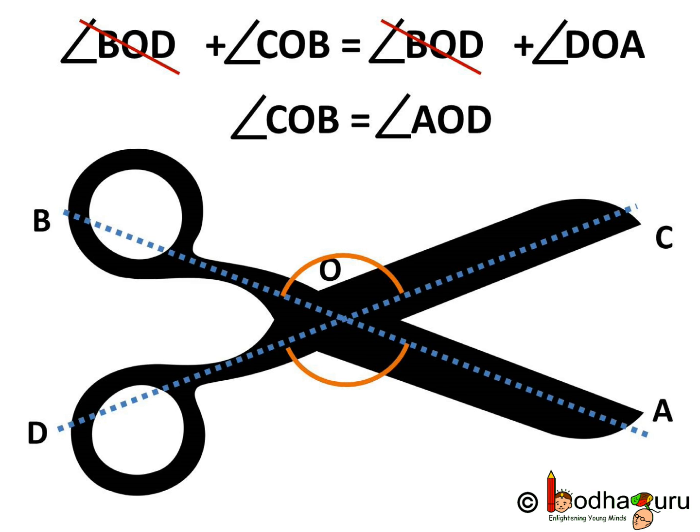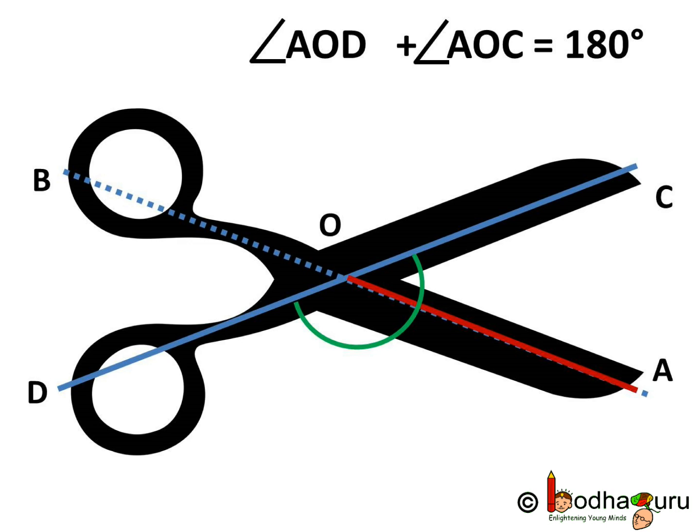Now, ray OA stands on the line CD. So angle AOD plus angle AOC is equal to 180 degrees. That is, they form a linear pair.